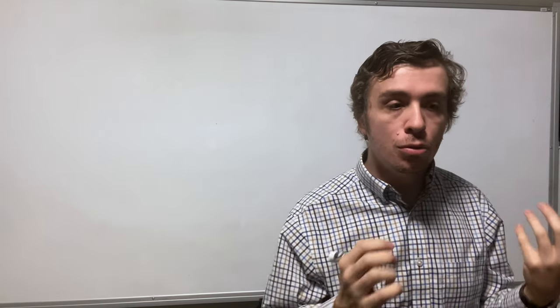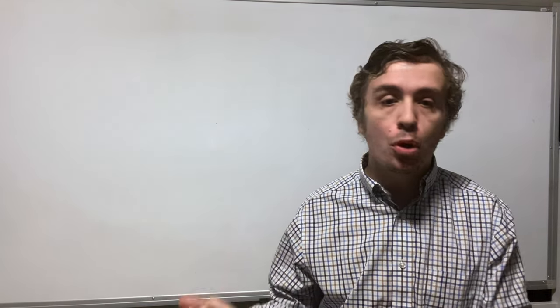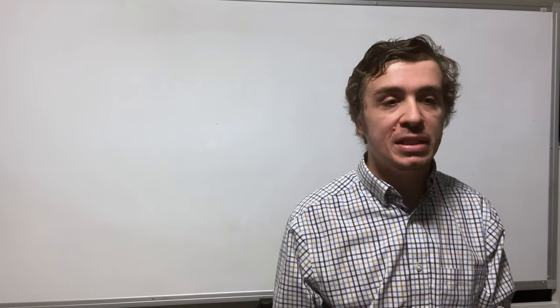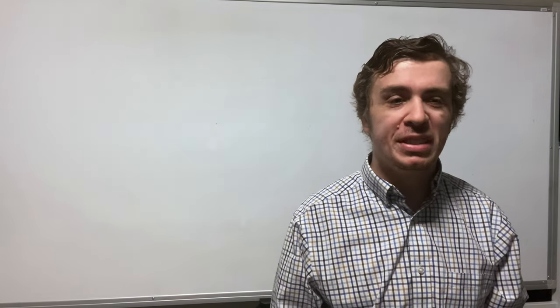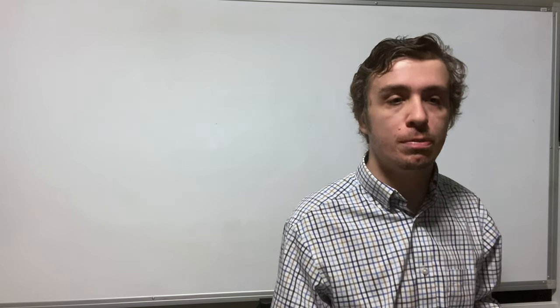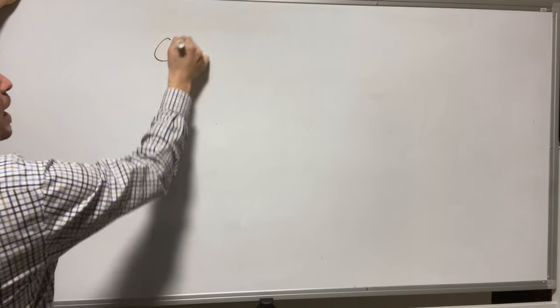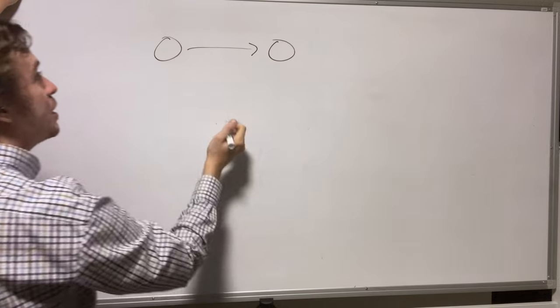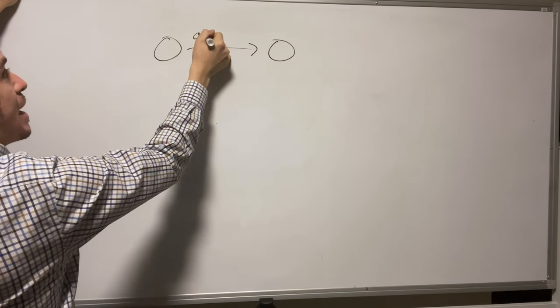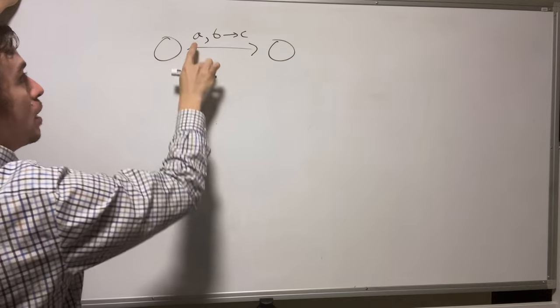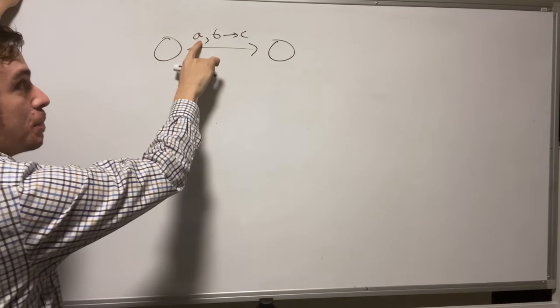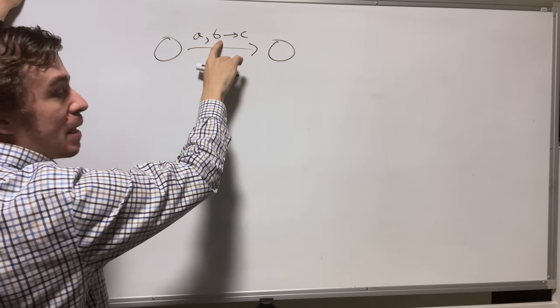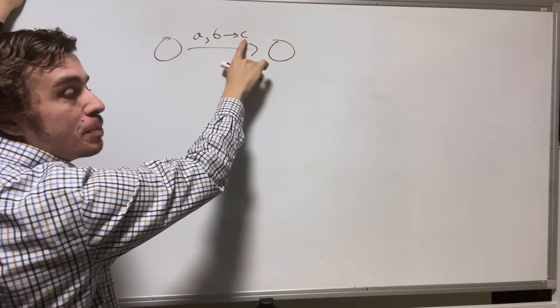One thing to keep in mind is how to know the difference between a pushdown automaton transition and a Turing machine transition because it's easy to get those mixed up. Can you remind us what the difference is? The PDA one, if we have a transition that looks like this, is going to be looking like A comma B goes to C, where A is the thing that's being read, B is the thing that's being popped off the stack, and C is the thing that's being pushed. So that's the PDA.